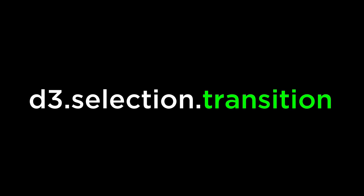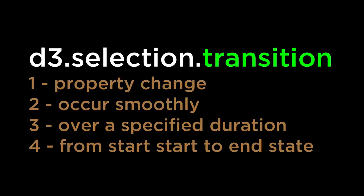D3 transitions are animations. The D3 transition method is used to animate the transition of a DOM element from a current state to an end state. It allows property changes to occur smoothly over a specified duration rather than instantaneously. It is the smooth transition of properties over a specified period of time that creates the look and feel of an animation. Breaking down what a D3 transition is, we can see four main areas: what properties can be changed, how the properties change smoothly, how to specify a duration, and how we can specify the start and end state.